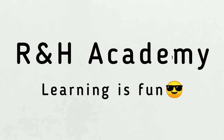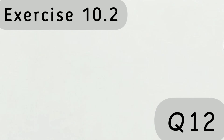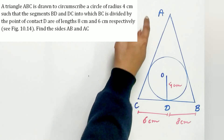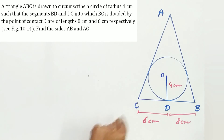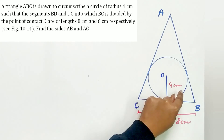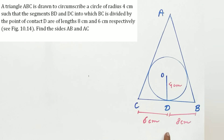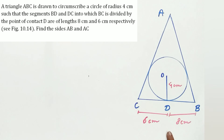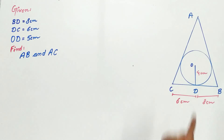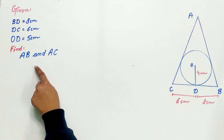Welcome to R&H Academy channel. Question 12 of Exercise 10.2, the last question on circles, says: a triangle ABC is drawn to circumscribe a circle of radius 4 cm such that segments BD and DC, into which BC is divided by the point of contact, are of lengths 8 cm and 6 cm respectively. We have to find sides AB and AC.